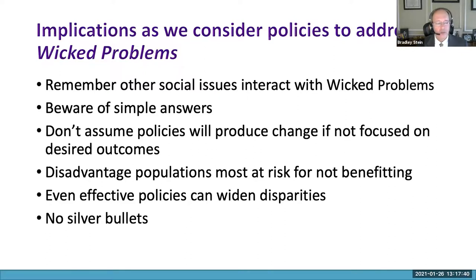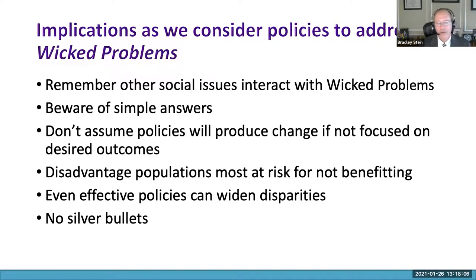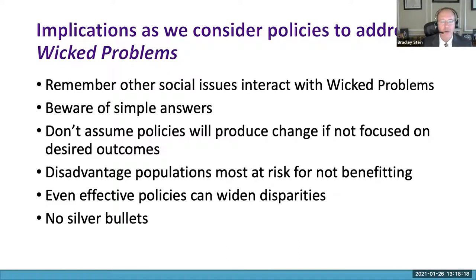We need to pay attention and not assume policies will produce the change we'd like them to produce if the policy doesn't specifically focus on the desired outcome. Disadvantaged populations — racial and ethnic minorities, people in rural communities, individuals with comorbid mental health disorders — are all at substantial risk from the opioid crisis, and most at risk from policies that don't pay attention to these details. The ACA analysis was eye-opening: a policy I thought was wonderful actually widened some disparities. And there are really no silver bullets — this is complicated and hard.